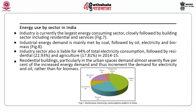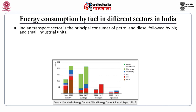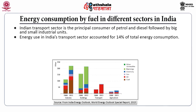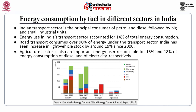Energy consumption by fuel in different sectors in India: The Indian transport sector is the principal consumer of petrol and diesel, followed by big and small industrial units. The energy used in India's transport sector accounts for 14% of total energy consumption. Road transport consumes over 90% of energy under the transport sector. India has seen an increase in light vehicle stock by around 19%. The agriculture sector is also an important energy user, responsible for 15% and 18% of energy consumption from diesel and from electricity respectively.